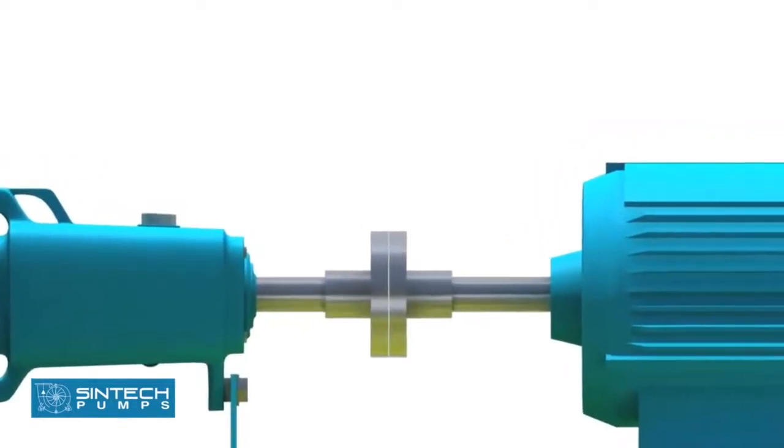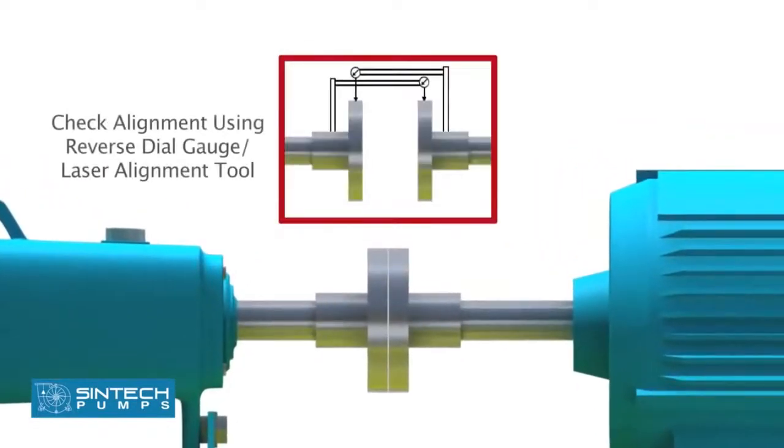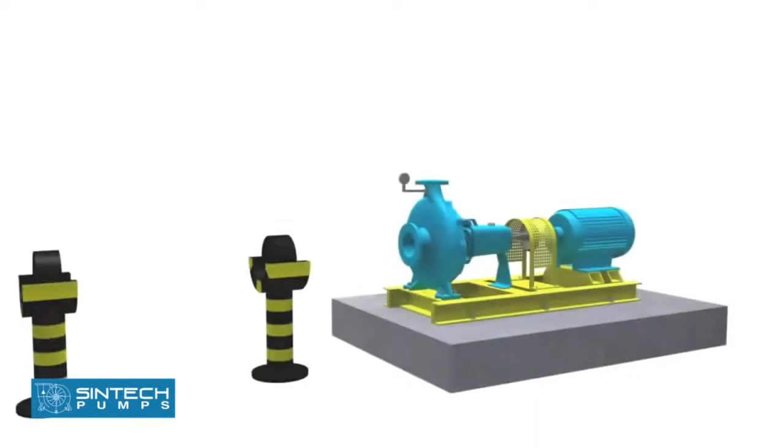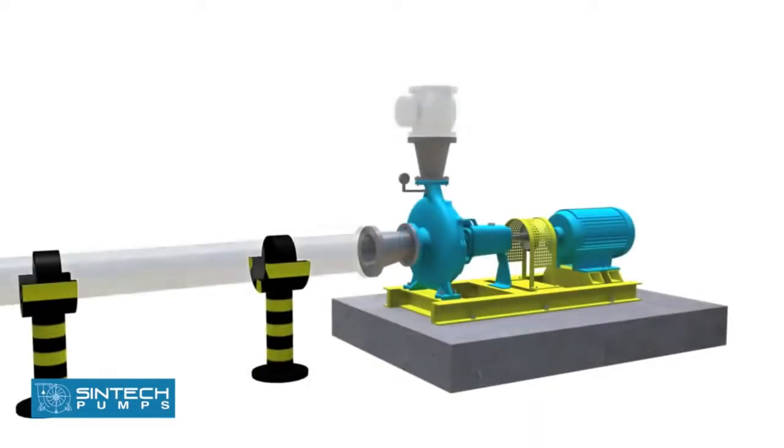In the subsequent step, the pump and the motor are aligned to the final tolerance using a reverse dial gauge or a laser alignment tool. After the alignment is completed, the piping associated with the pump should be bolted.